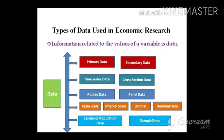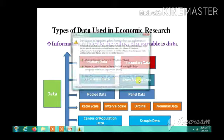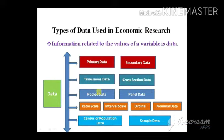Primary data is generally collected from door-to-door surveys or household surveys and has not been published previously. Secondary data is published data — published by institutions, government organizations, or journals. Time series data is the value of a variable over different periods of time. Cross-section data is a collection of data at a particular point in time.